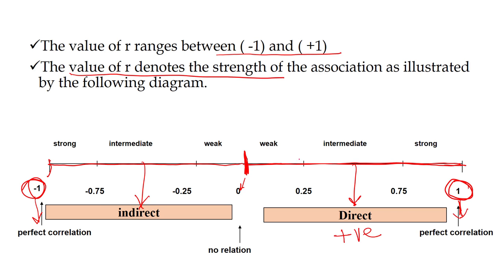If the value ranges between 0 and 0.25, it is called weak correlation. If the coefficient of correlation is between 0.25 and 0.75, then it is called intermediate or moderate correlation.